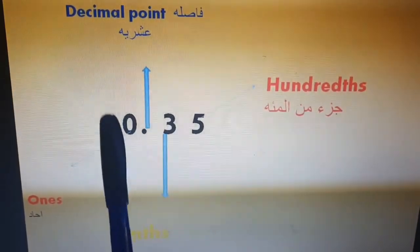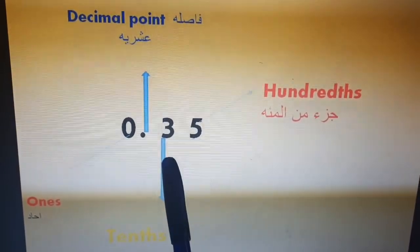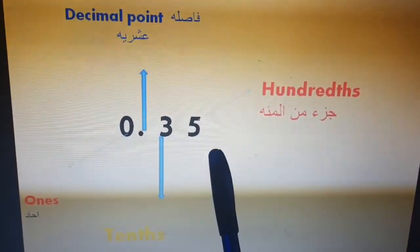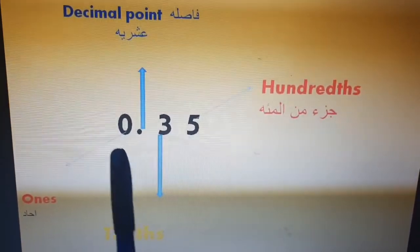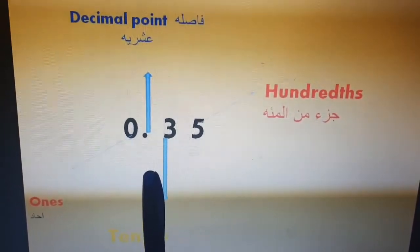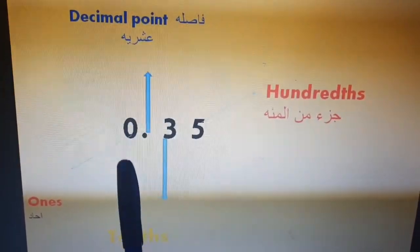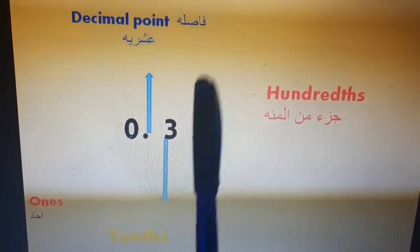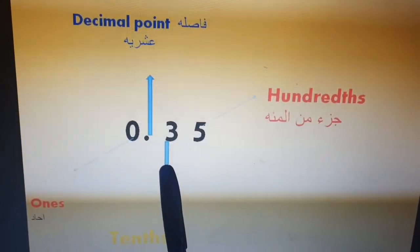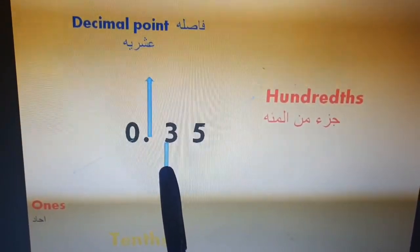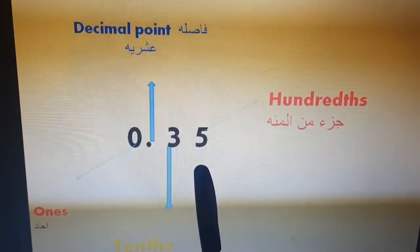Together: ones, decimal point, tenths, hundredths. Again: ones — al-ahad, decimal point — al-fasil al-ashriya, tenths — al-ajzaa min al-ashara, hundredths — al-juz min al-mia.